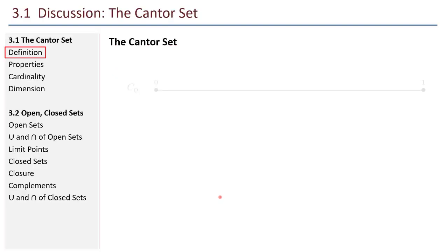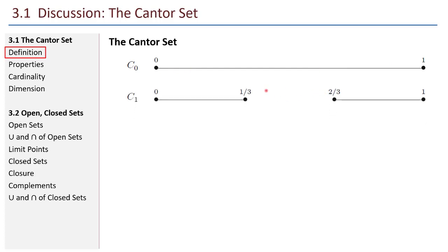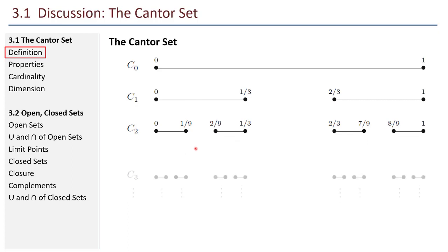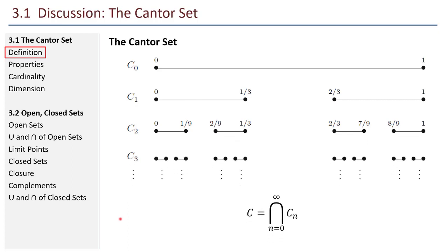The Cantor set. Imagine this closed interval from 0 to 1 — all the real numbers from 0 to 1, including 0 and 1. Then we remove the middle third, but we leave the endpoints, so one-third and two-thirds remain. Next, I remove the middle third from those two remaining segments. And then remove the middle third from those two, and on and on forever.